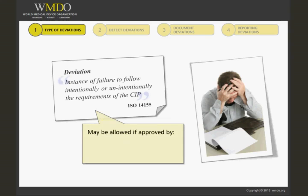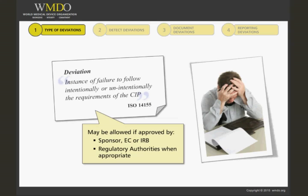A deviation may be allowed if the investigator asks for prior approval from the sponsor, ethics committee, or institutional review board, and when appropriate, the regulatory authorities as well. An example may be that the investigator would like to deviate from a specific eligibility criterion to include a given subject. This may or may not jeopardize the homogeneity of the data to be collected, and the sponsor has to decide upon the inclusion of this patient.